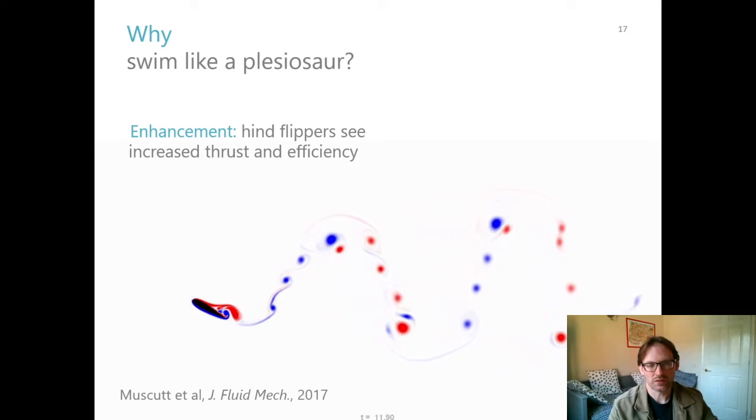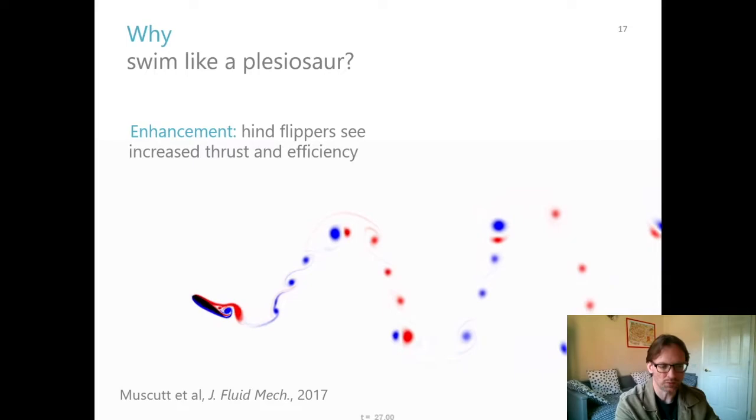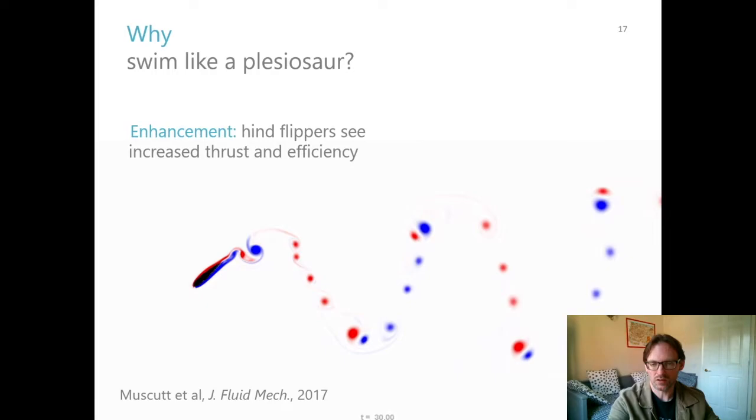Another reason is that the back flippers, the hind flippers, can see an increase in both thrust and efficiency. So this is a video of a simulation that we developed a few years ago. It's a single flipper moving up and down. So this is like a slice through the flipper and we're looking at a cross section of the flow.